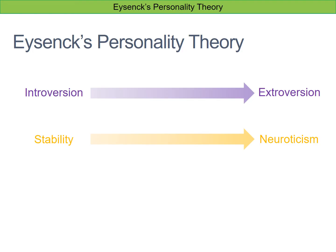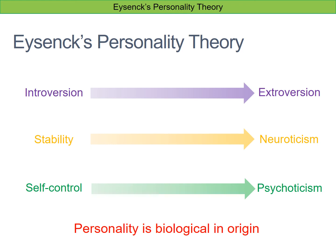The third dimension, which Eysenck added to his theory a little bit later, was self-control at one end and psychoticism at the other. Psychoticism was generally characterised by being quite cold, aggressive, and manipulative. Eysenck did state that personality was biological in origin, so you were born somewhere on each of these dimensions.